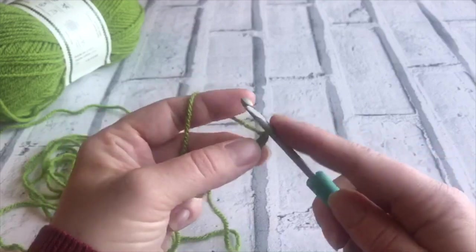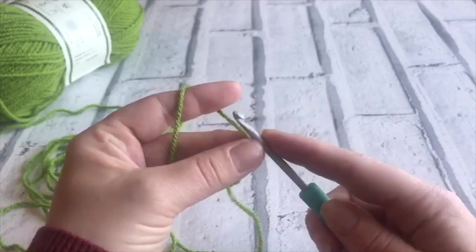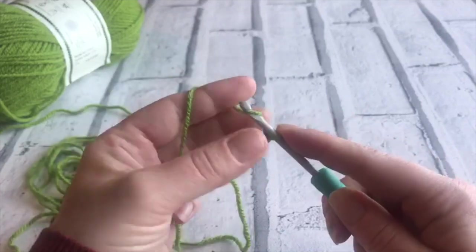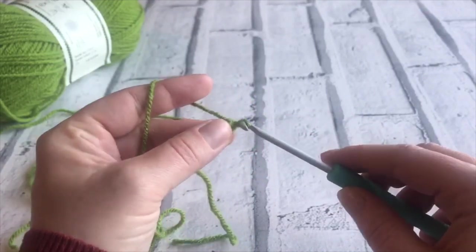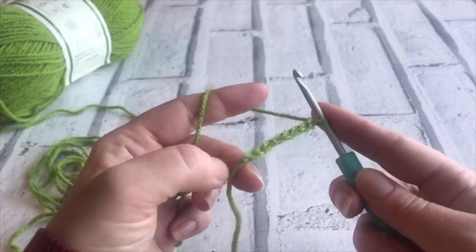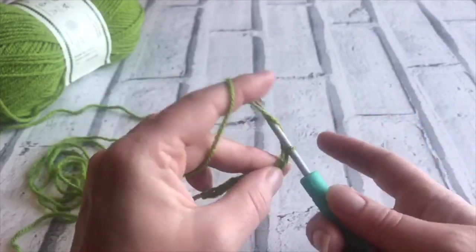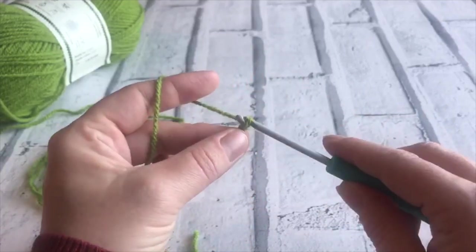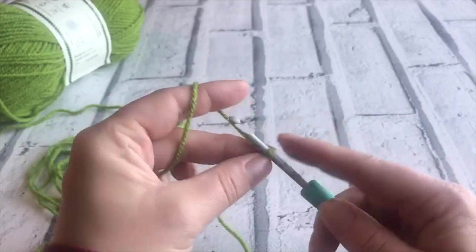Now you may find that when you're starting, your chain is very tight, and that's something that you want to avoid because you do need to work it back the other way. So you can just keep practicing making those chains just by literally bringing the yarn over the hook and through the loop on your hook.